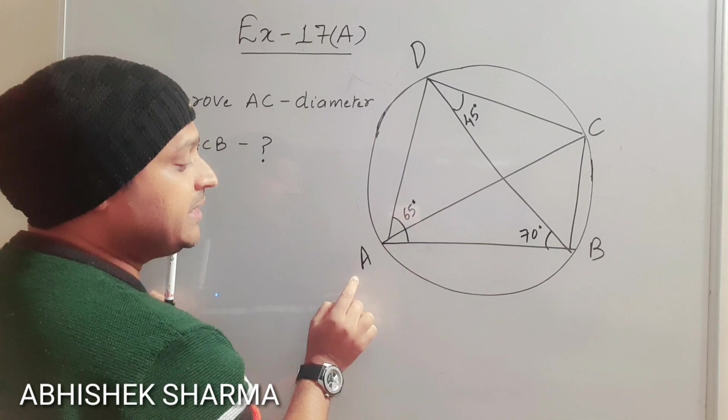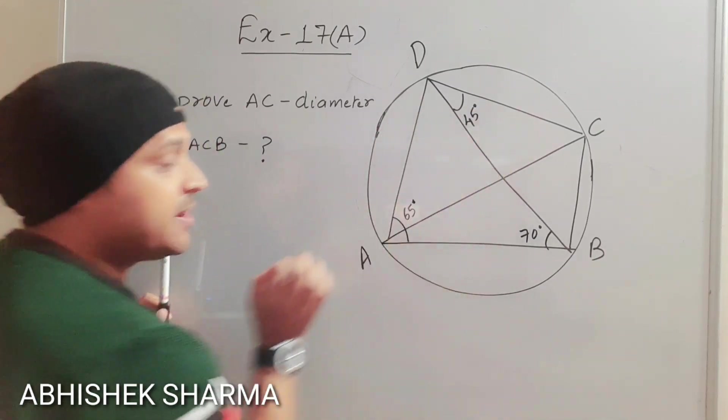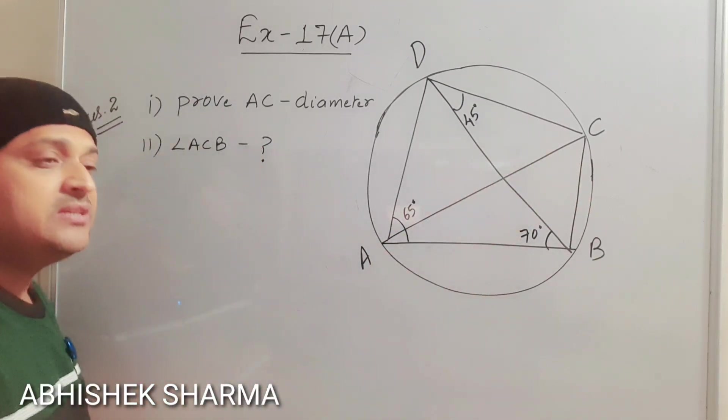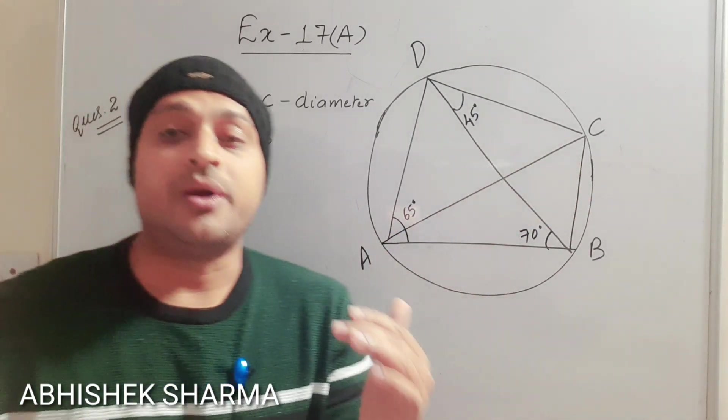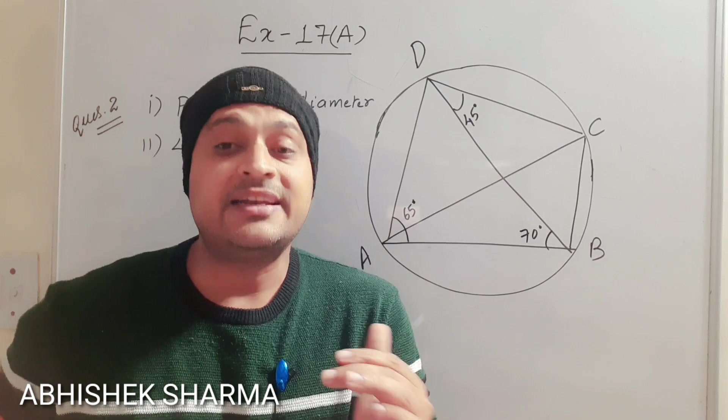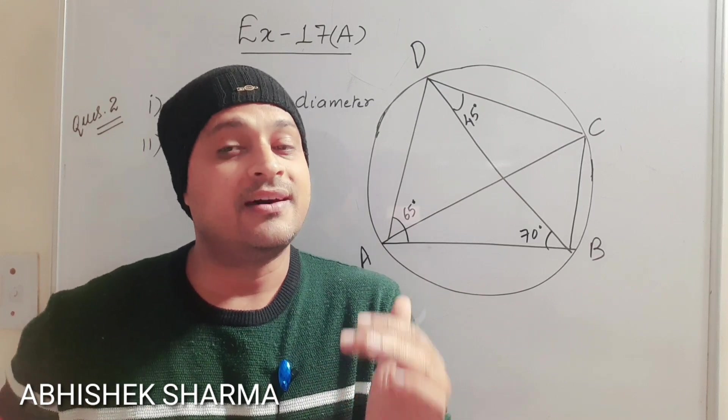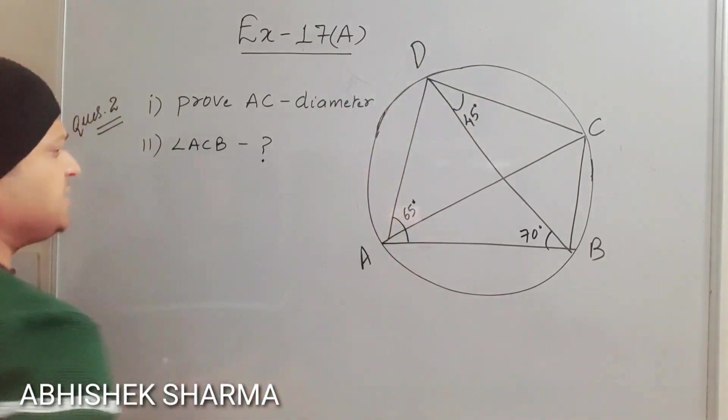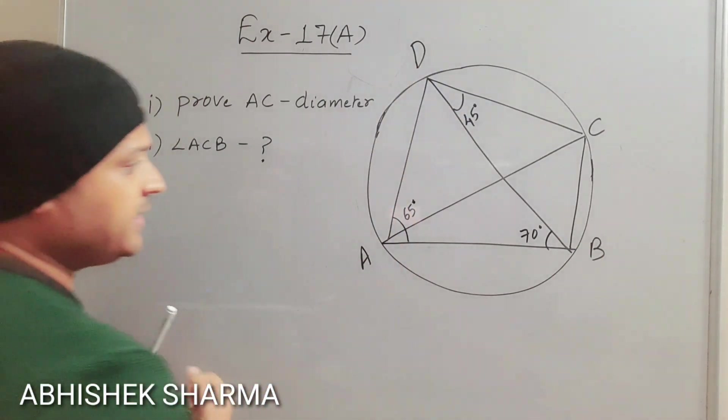Angle ADC, if we can prove it as 90 degrees, then we can say AC is our diameter. It means that it is a converse of the theorem. The angle at the semicircle is right angle. So we have to prove it as 90 degrees. This is very easy. How will we prove it as 90 degrees?